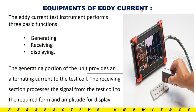Equipment of Eddy Current. The Eddy Current test instruments perform three basic functions: generating, receiving, and displaying. The generating portion provides an alternating current to the test coil. The receiving section processes the signal from the test coil into the required form of amplitude for display. That means Eddy Current is generated, received, and the output is displayed. If any defect or problem is associated, we identify it.